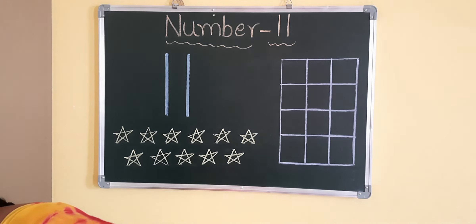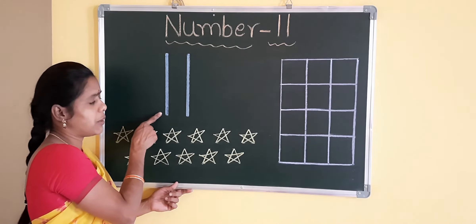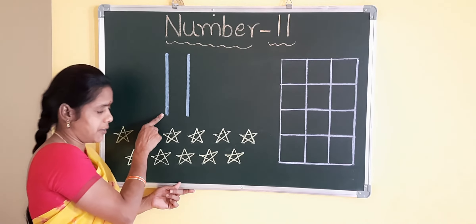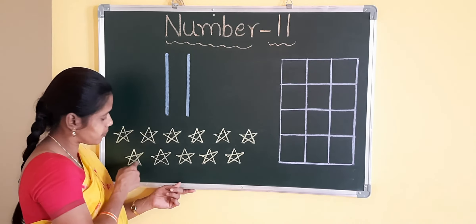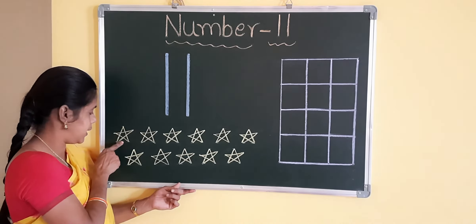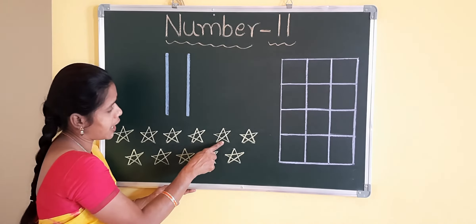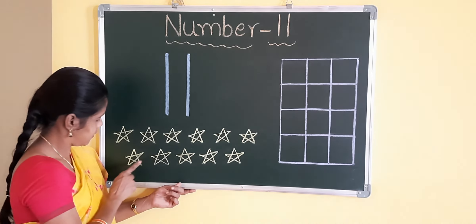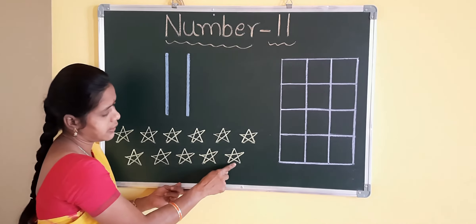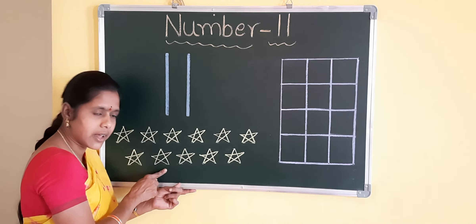Now I will show you. Children, look at the board. Which number is this? Yes, this is number 11. What are these? These are stars. Count the stars. 1, 2, 3, 4, 5, 6, 7, 8, 9, 10, 11. You can see the 11 stars.